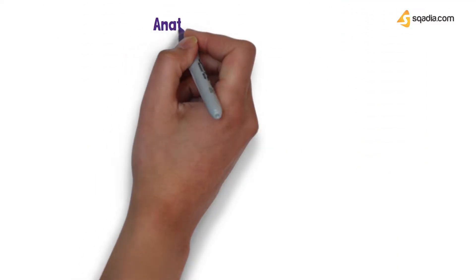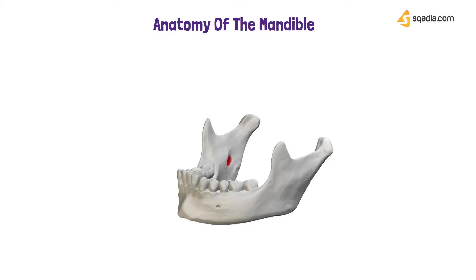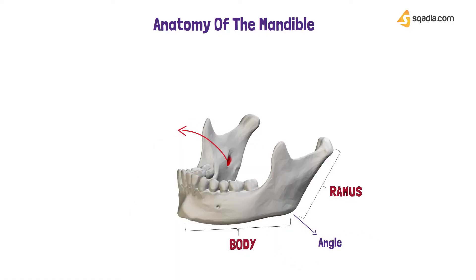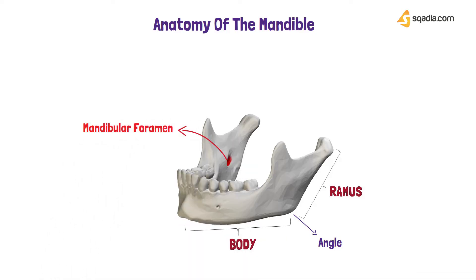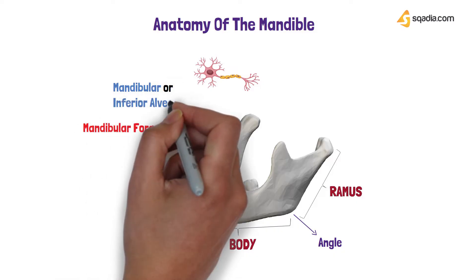The mandible is composed of the body. Vertically attached to the body is the ramus. Between the ramus and the body lies the angle of the mandible. Marked in red is the mandibular foramen, through which runs the mandibular nerve, also known as the inferior alveolar nerve.